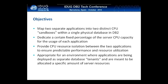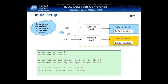I'm going to walk you through an example of how you can effectively sandbox multiple workloads on your system using the new WLM dispatcher technology in DB2 10.1. What we're going to try to do in this example is take two separate applications and map them into two distinct CPU sandboxes on your database server, dedicating a certain fixed percentage of your server CPU to each application.